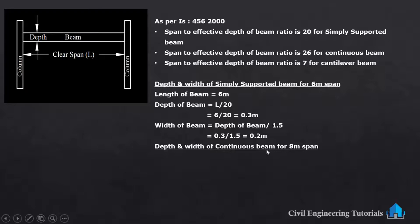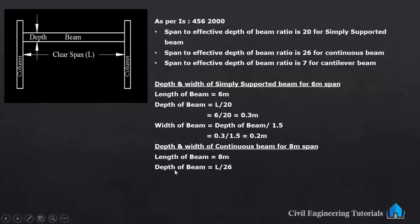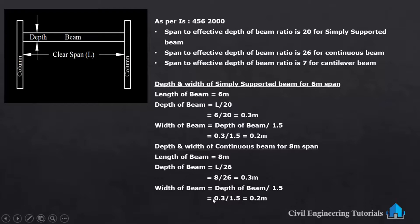Next, depth and width of continuous beam for 8 meter span. Span to effective depth ratio is 26 for continuous beam. Length of beam is 8 meter. Depth of beam is L by 26, so 8 divided by 26 is 0.3 meter. Width of beam is depth divided by 1.5, so 0.3 divided by 1.5 gives 0.2 meter.